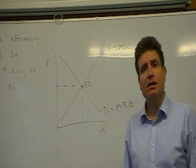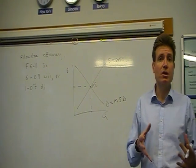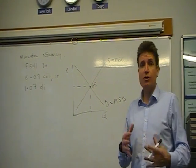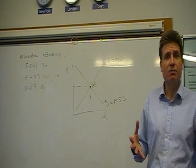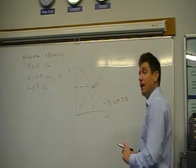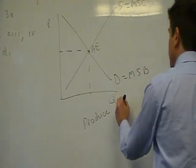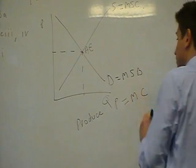Well, it means that what you want is production where price, or the price paid by consumers, is equal to the marginal cost of producing that item. So the key condition - remember this - the key condition for allocative efficiency is to produce where price is equal to marginal cost.